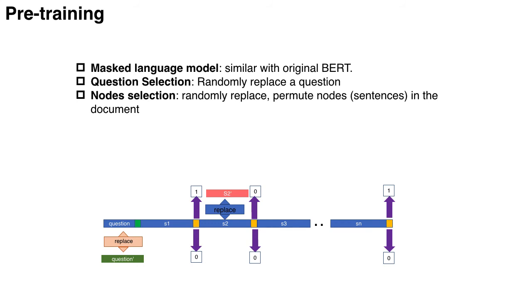In this paper, we also propose two additional tasks to pre-train our method. Since the original masked language model proposed in BERT is focused on local information, we additionally add the question selection task and node selection task to the model.